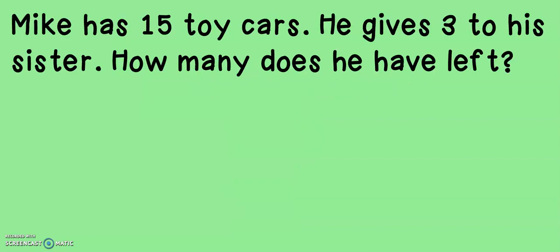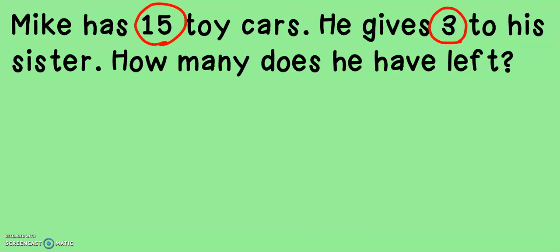Let's look at our first problem. This story problem is about Mike. Mike is our character in the problem. Mike has 15 toy cars. He gives three to his sister. How many does he have left? We know that Mike is our character, and as I read the problem, I circled the two numbers that we have to work with. Let's make a number sentence to describe what is happening in this problem.